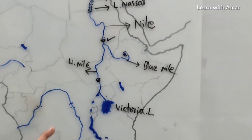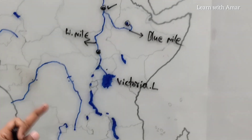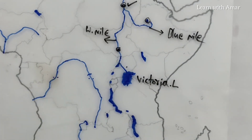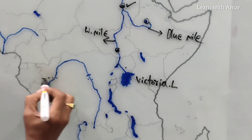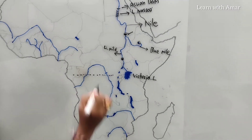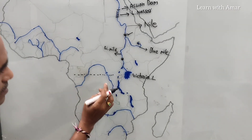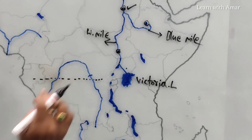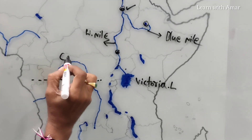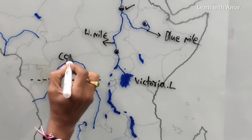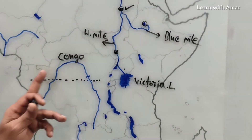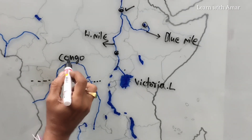Now, what is special about this river? This is the only river which crosses the equator twice — one time and a second time. You know what is the river name? It is River Congo. Congo.